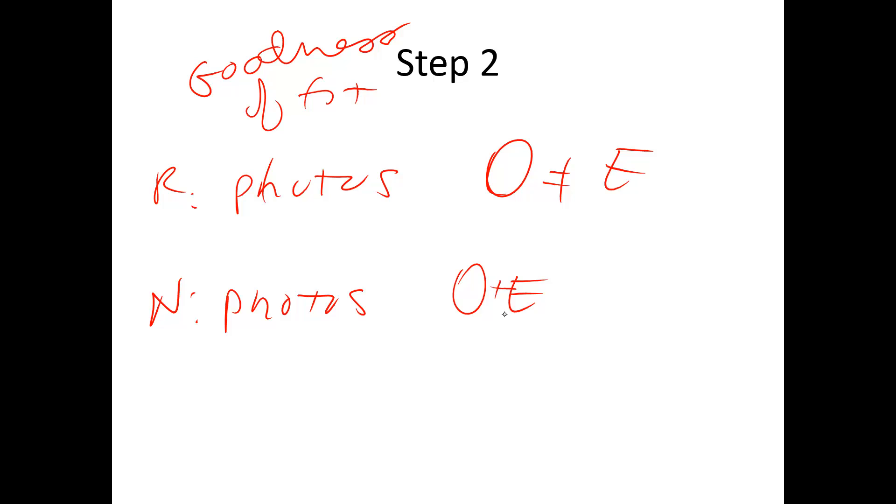Step two is what is the variable involved? So this is a goodness of fit. There is only one variable, the type of photos that we're using. We're going to say that the observed values in the book don't match the expected values, there's more of one type than the other. The observed values in the book do match the expected values. So if the observed values match the expected values, then all the types of pictures are the same, they're using the same amount of each type. If the values are not the same, then they're using more of one type than another.